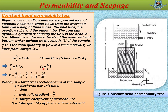We know from Darcy's law Q = kiA, and the hydraulic gradient i = H/L. Replacing i = H/L, we can write K = QL / (AHT), where A = total cross-sectional area of the sample, Q = discharge per unit time, T = time, i = hydraulic gradient = H/L, K = Darcy's coefficient of permeability, and capital Q = total quantity of flow in time interval T.